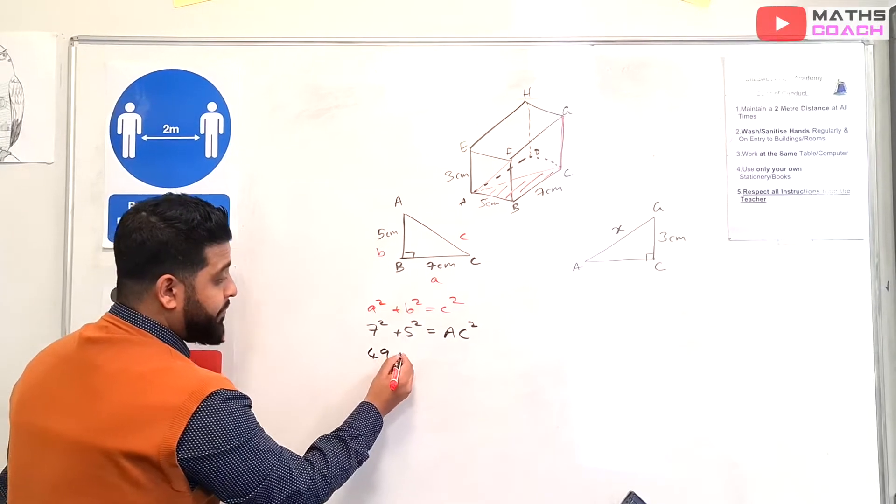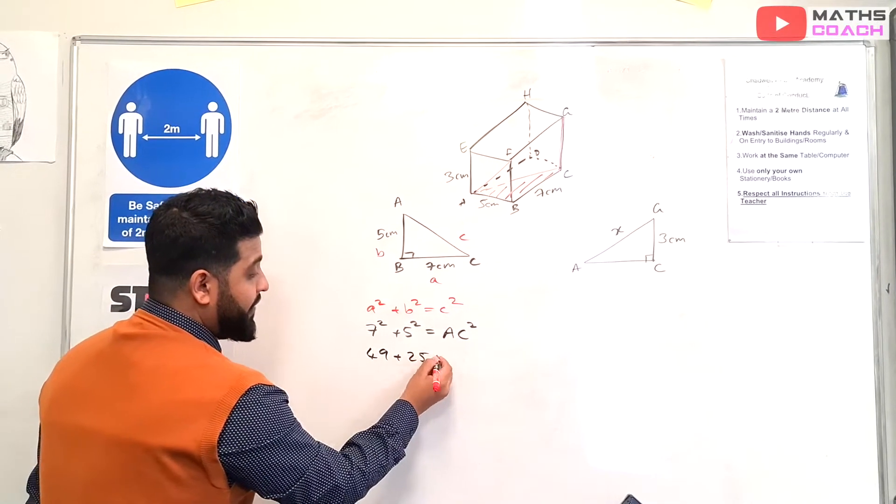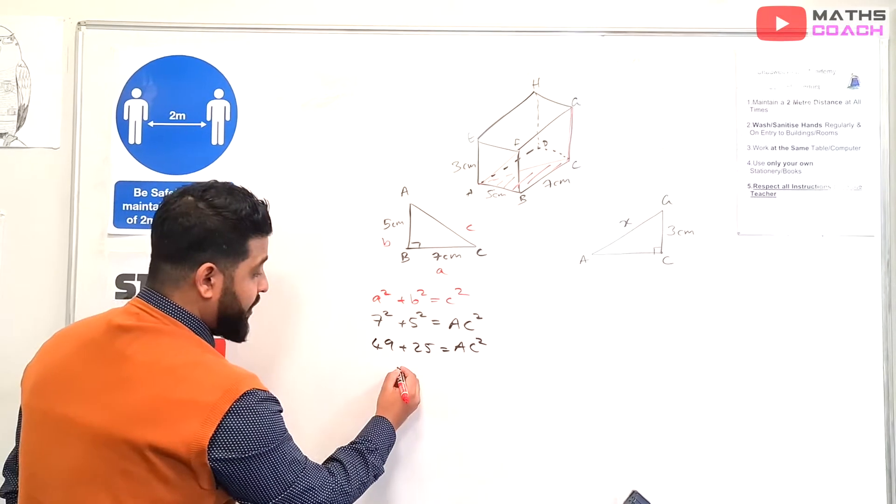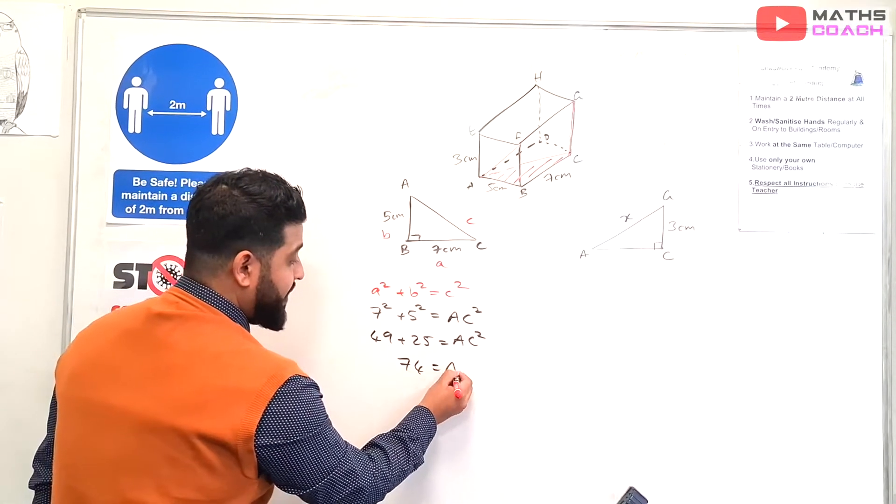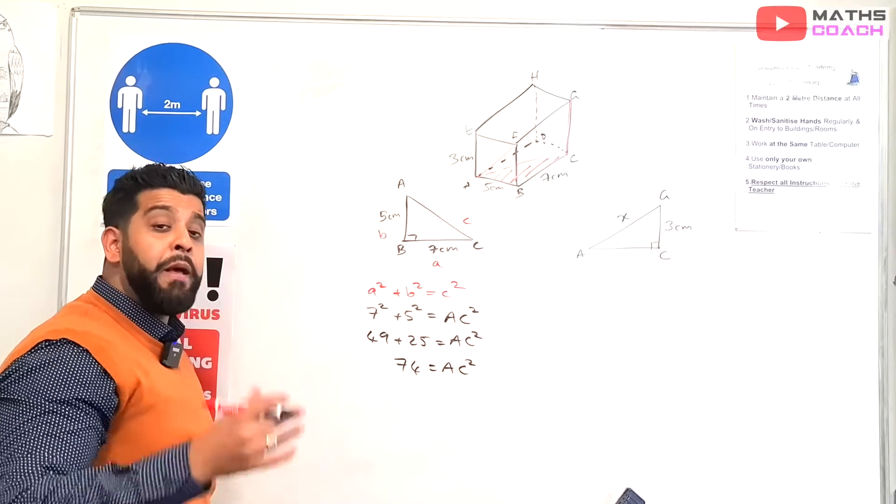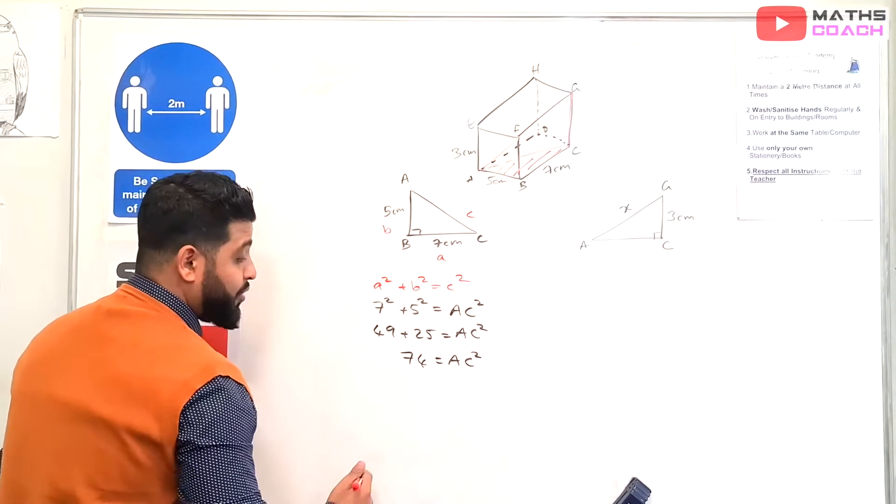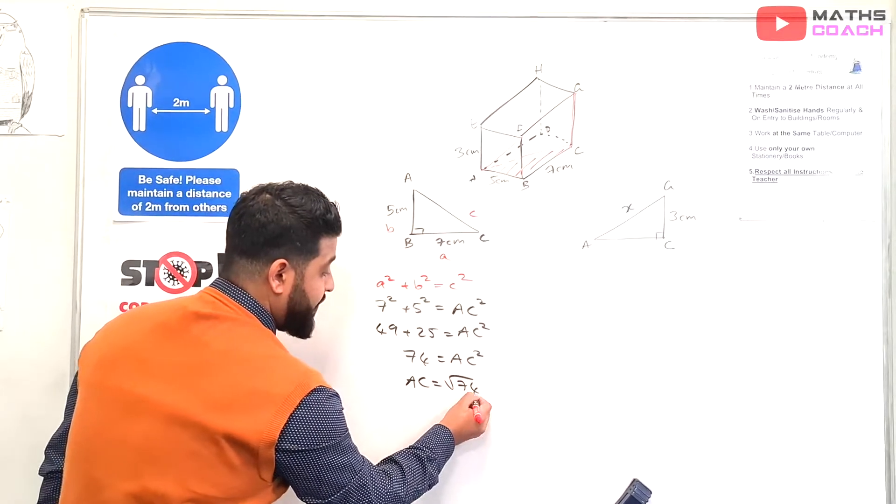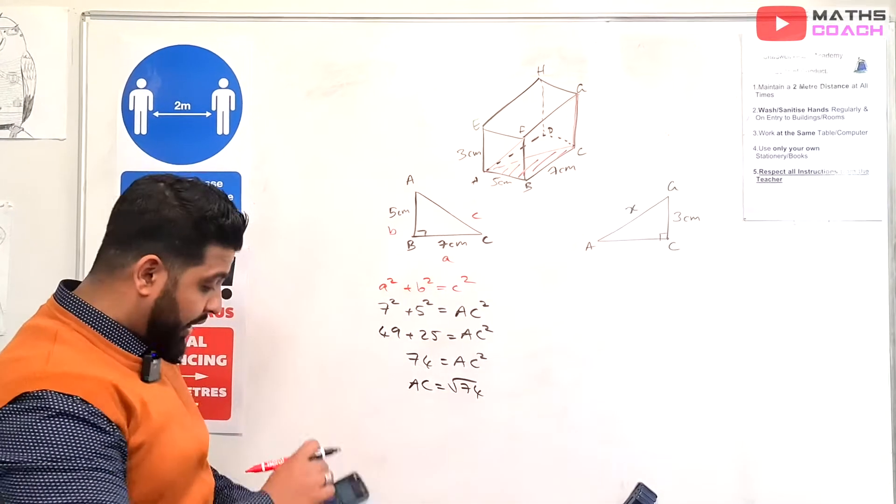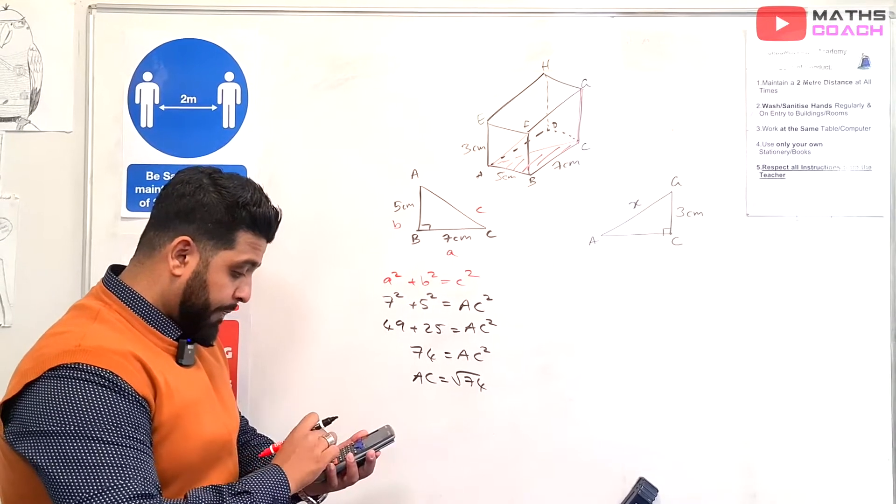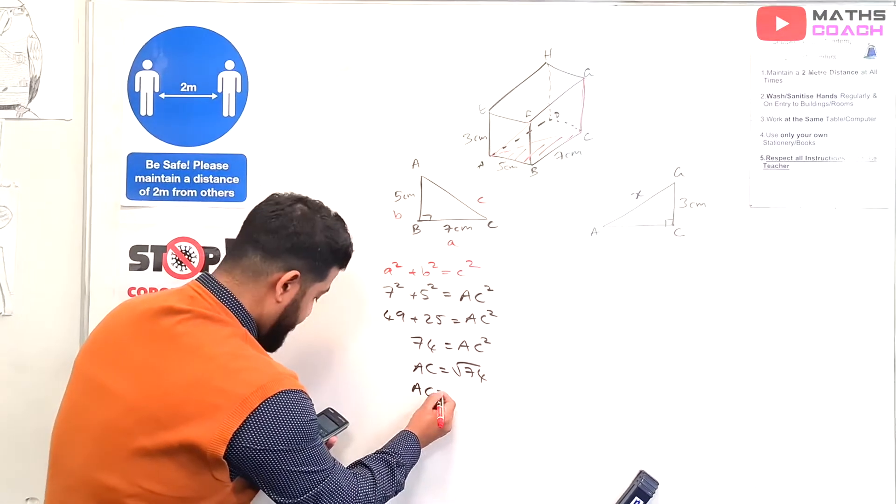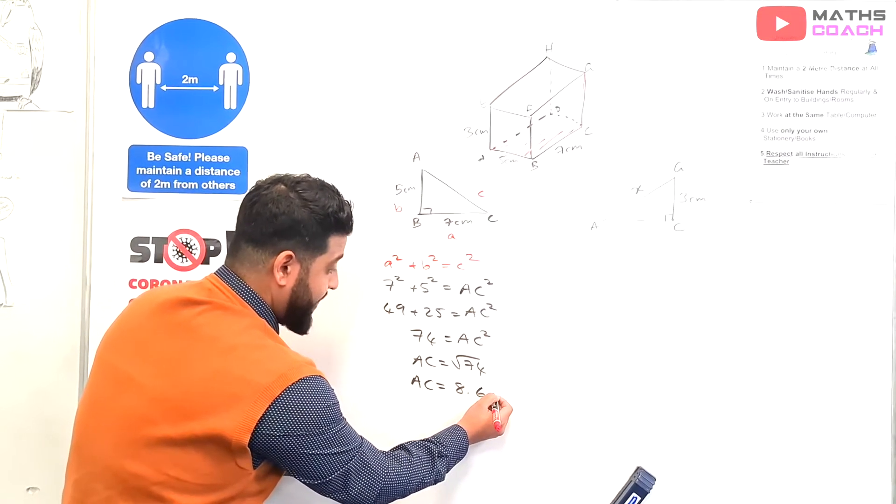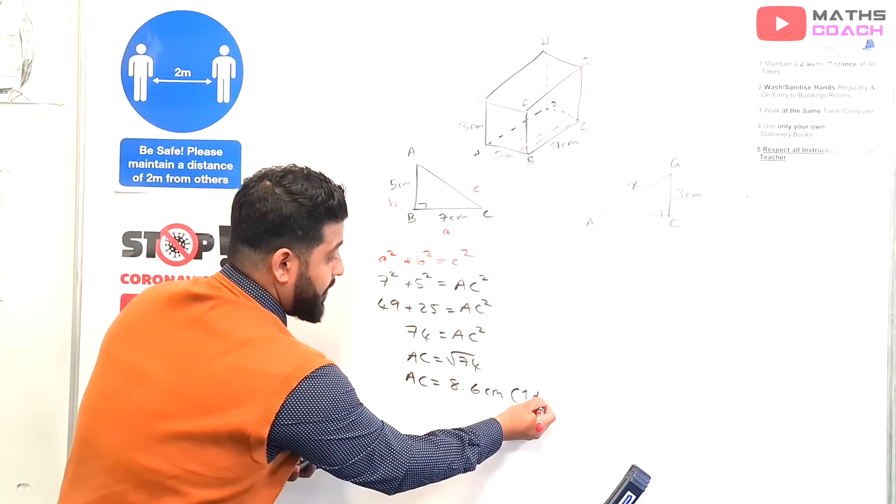So, 7 squared is 49 plus 5 squared, which is 25. And that's our AC squared. We add 49 plus 25, which is 74. So AC squared is 74. But we want AC. So we are going to square root 74. So, therefore, AC is equal to the square root of 74. And then we can do that on our calculator, the square root of 74. And we get AC as 8.6 to 1 decimal place.